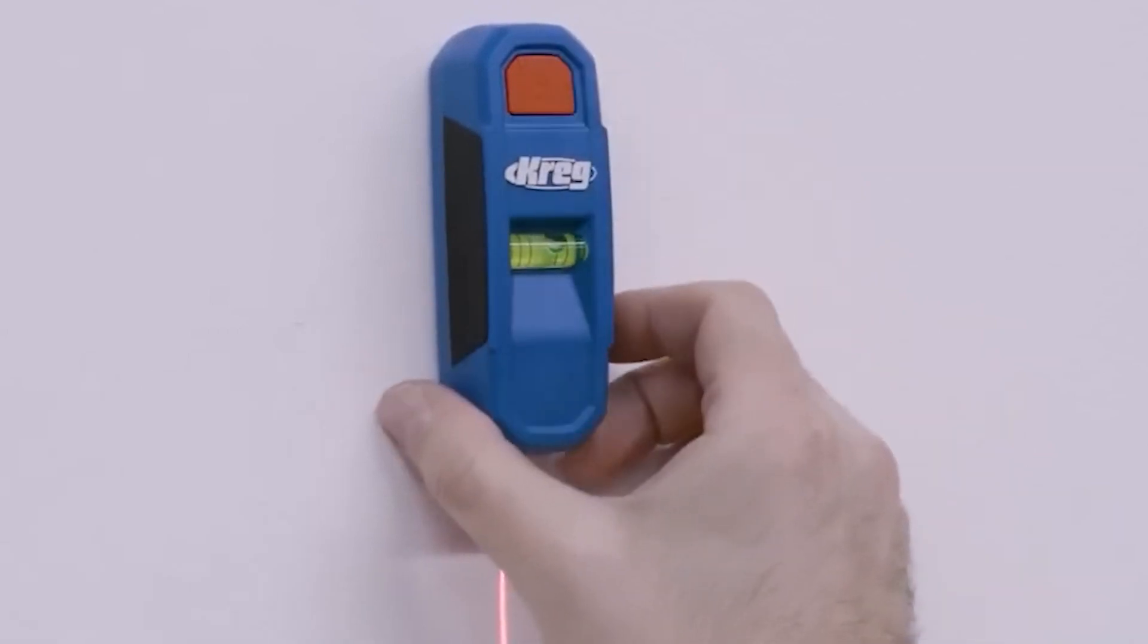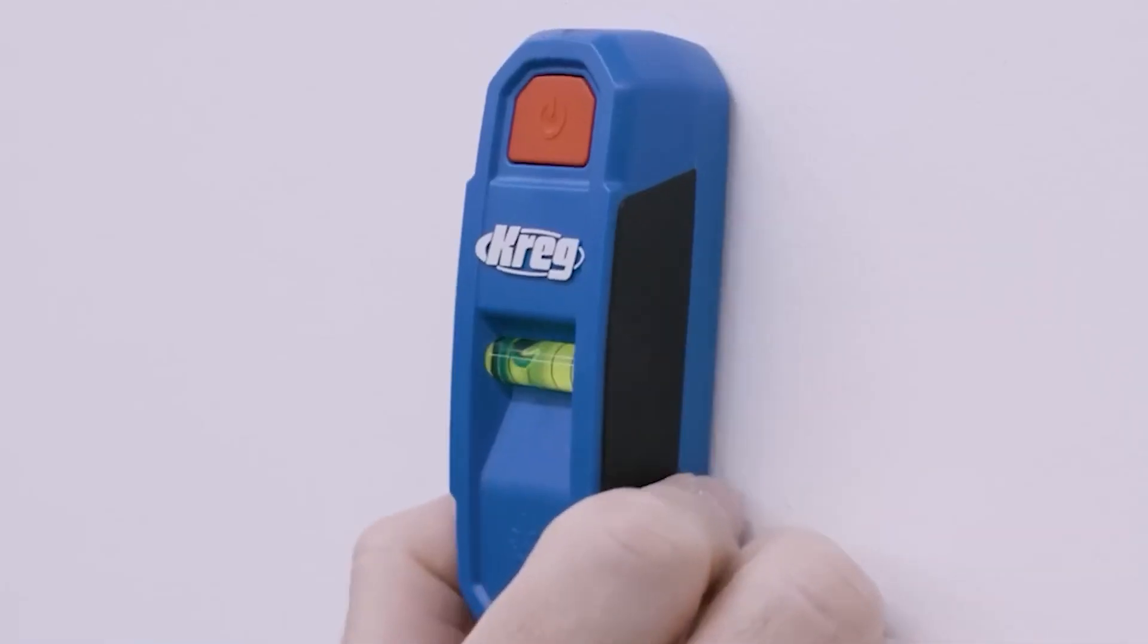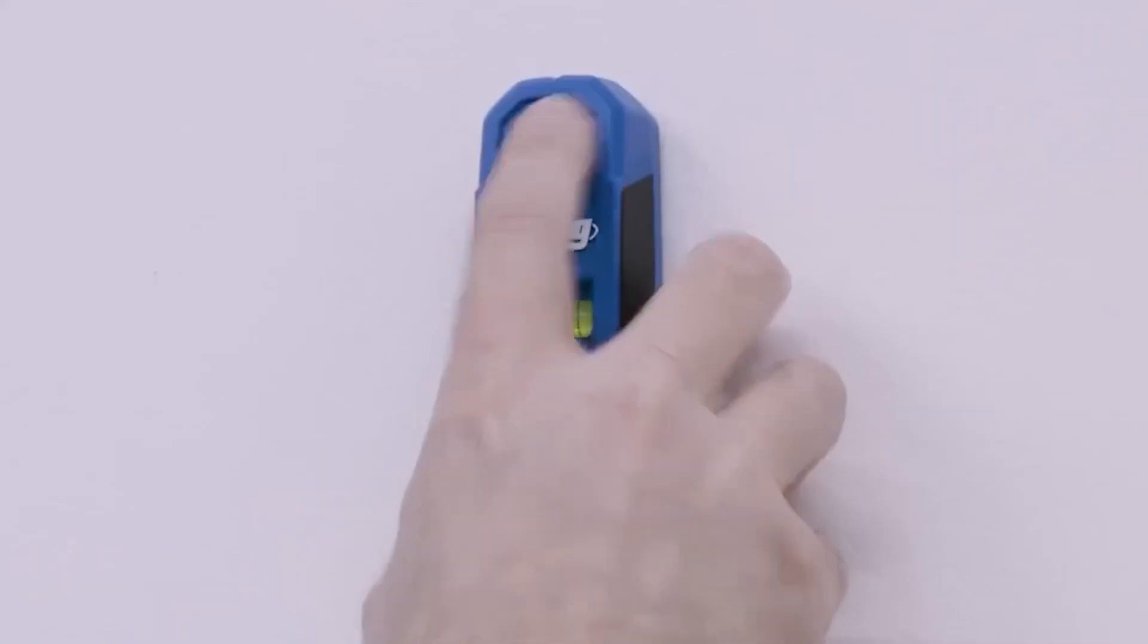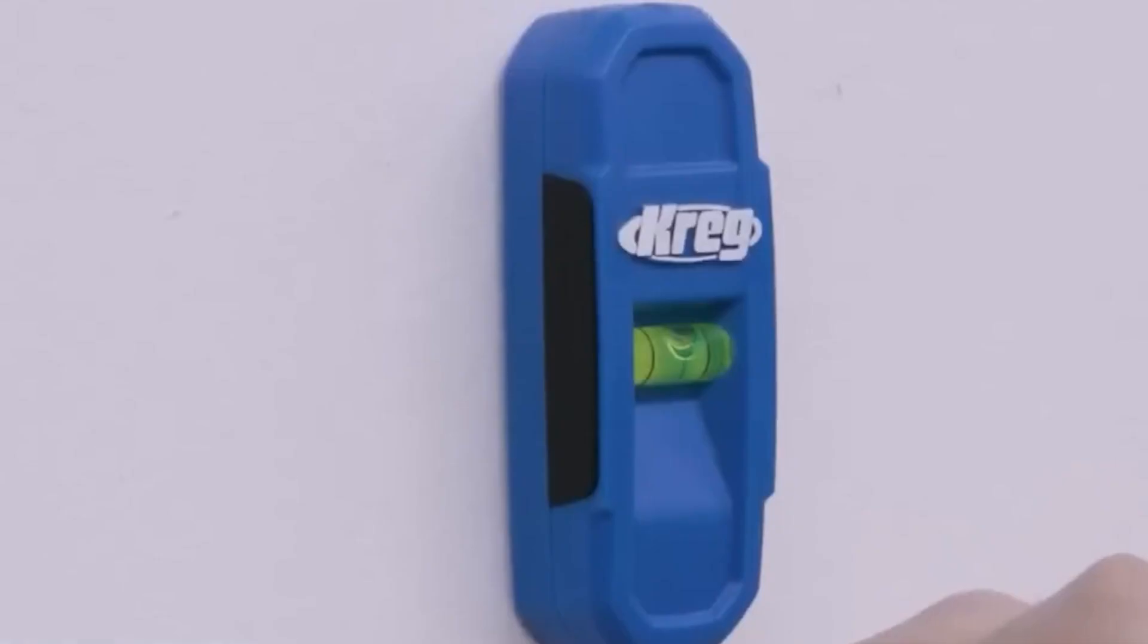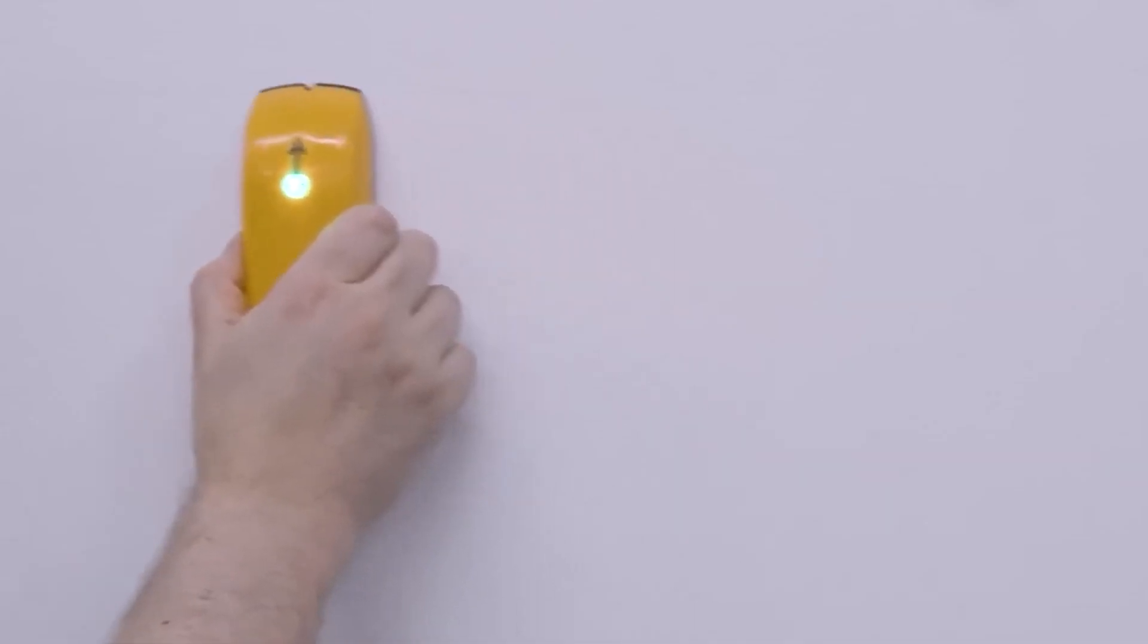The basic version operates without the need for a power supply, while the advanced version features a laser and requires two AAA batteries. Both versions come equipped with a bubble level and notches for effortless pencil marking. They're available at a price of $11 or $30.